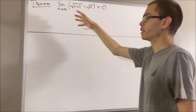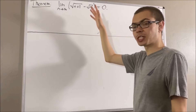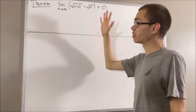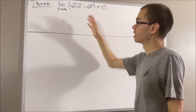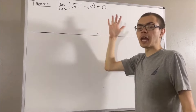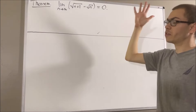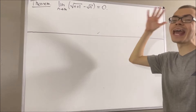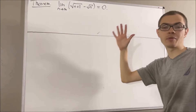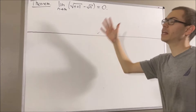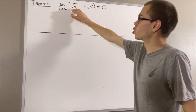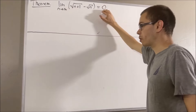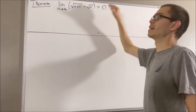In proving this, we're going to use the definition of the limit of a sequence. By definition of the limit of a sequence, this means that for every epsilon greater than 0, there exists a positive integer k, such that for all positive integers n greater than or equal to k, the absolute value of square root of n plus 1 minus square root of n minus 0 is less than epsilon.